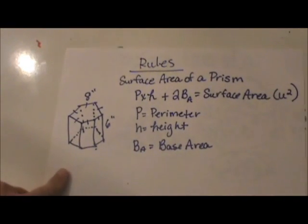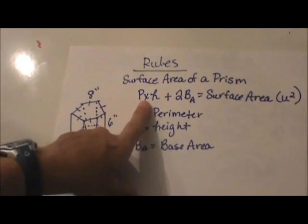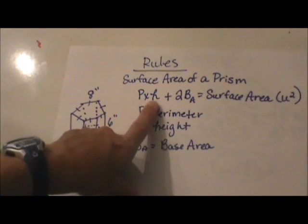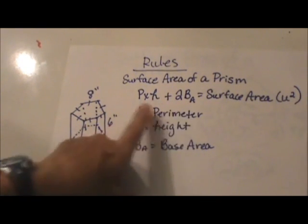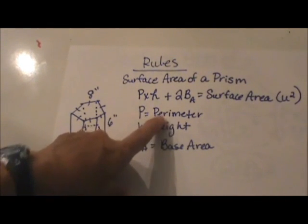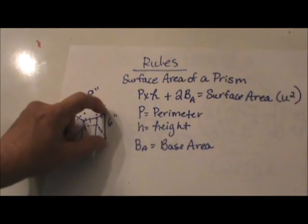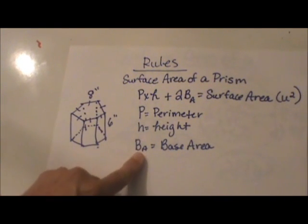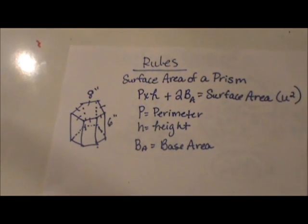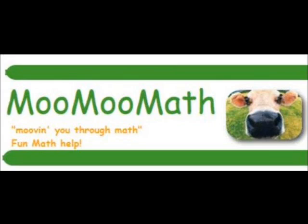So let's go over the formulas. Here are the rules. You take the perimeter times the height plus two bases, and that is what we just did with the hexagonal prism. P stands for perimeter, H is the height of the prism, and BA is the base area. So I hope this video was helpful. Thank you.